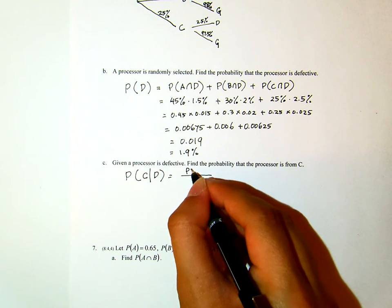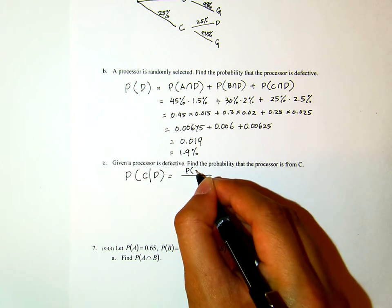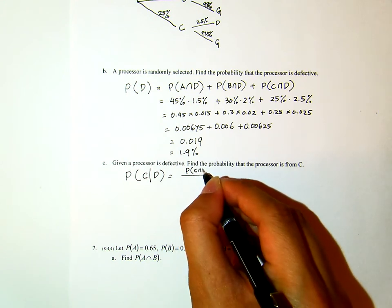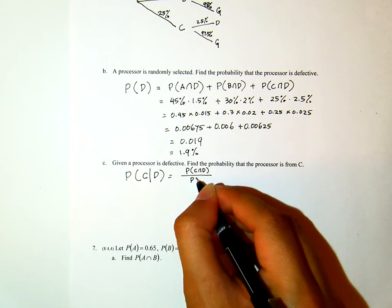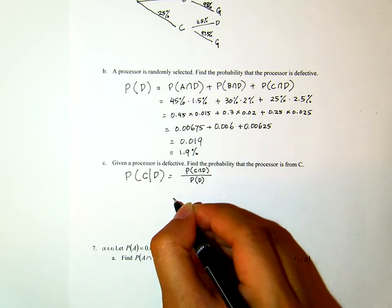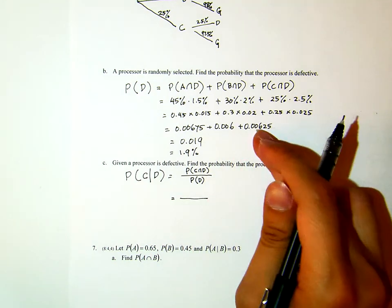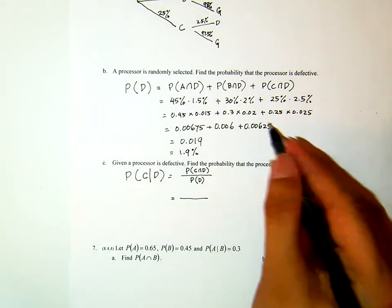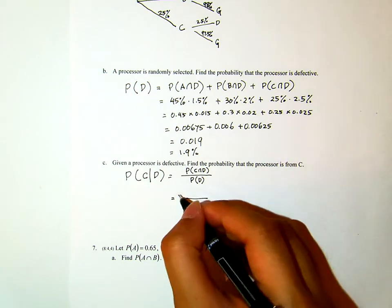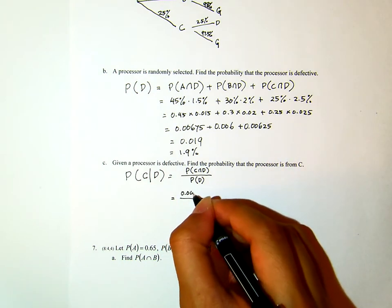We find the probability that the defective processor is actually coming from company C. Now, this is equal to the probability that the processor is coming from C and defective over the probability that the processor is defective.